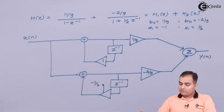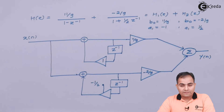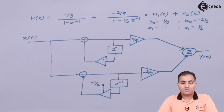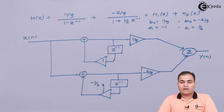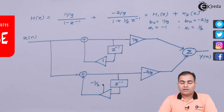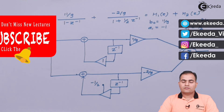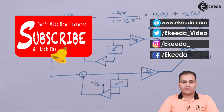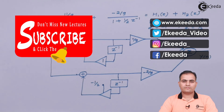This is all about cascade form and parallel form. The first three numericals are based on DF1 and DF2, and the next three are totally based on cascade and parallel. Stay tuned with Ikeda and subscribe for further videos. Thank you so much.